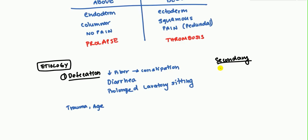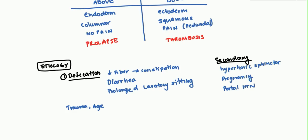The first secondary cause is a hypertonic sphincter, which makes the patient push harder while defecating, causing increased abdominal pressure and engorgement of the anal vessels. Pregnancy can also lead to hemorrhoids, again due to increased abdominal pressure. And of course, portal hypertension — often caused by liver cirrhosis — causes back-up flow, and can also cause esophageal varices, anal varices, and even umbilical varices.